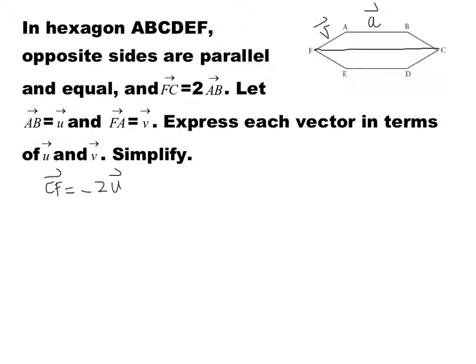The next vector we are going to find is FB. Vector FB — I can write it as FA plus AB. But FA is v and AB is u, so it's going to be v plus u.